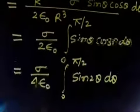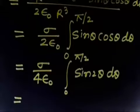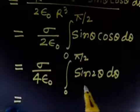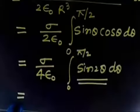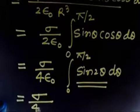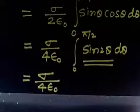Performing this integration gives a result of 1, so the final electric field at the center of the hemisphere is E equals sigma over 4 epsilon-naught. That is your result — you should verify this integration yourself.